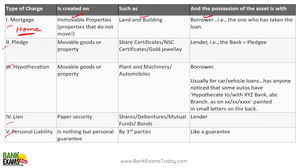Pledge — for example, a loan against gold, i.e., a gold loan. In this case, the bank has possession of your jewelry. It is a movable property.